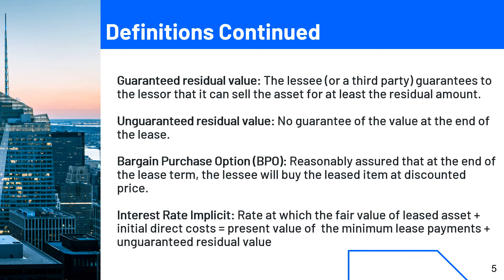The guaranteed residual value means the lessee guarantees the lessor that they can sell the asset for a specific amount — for example, that a four-year-old iPhone will not sell for less than $100. The unguaranteed residual value means there is no guarantee of the value at the end of the lease. The bargain purchase option means there's an option at the end of the lease for the lessee to buy the leased item at a very good deal, and it's most likely going to happen — for example, buying back a car at the end of your lease for $1.